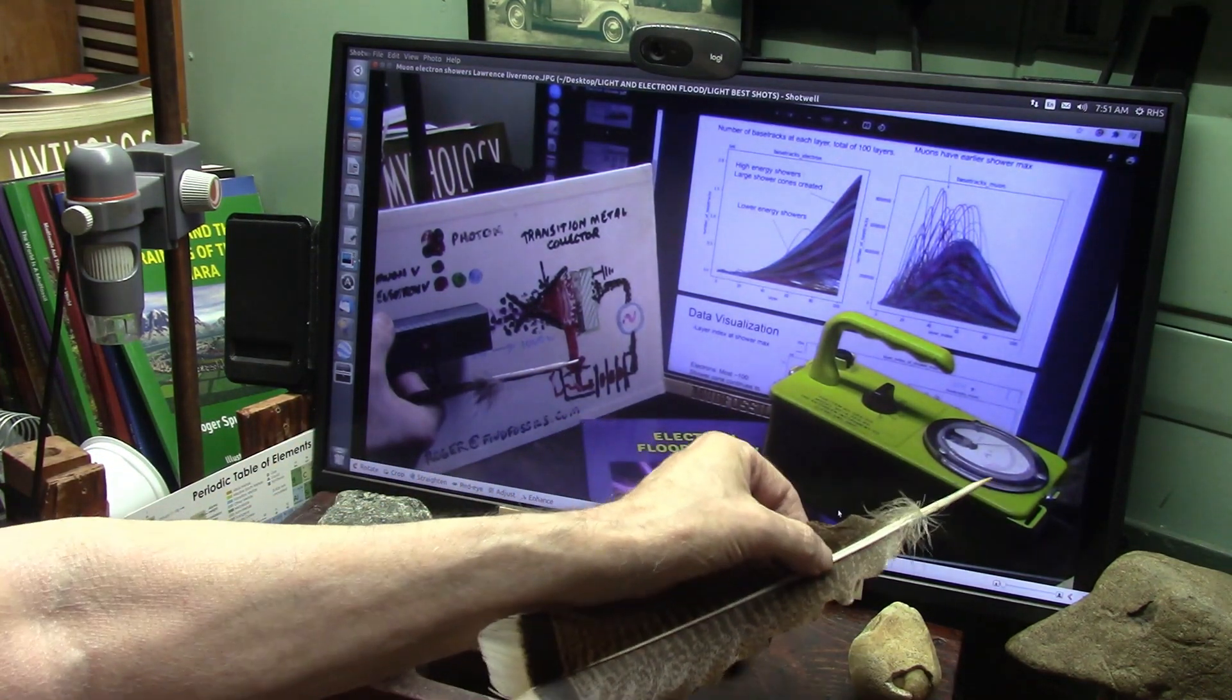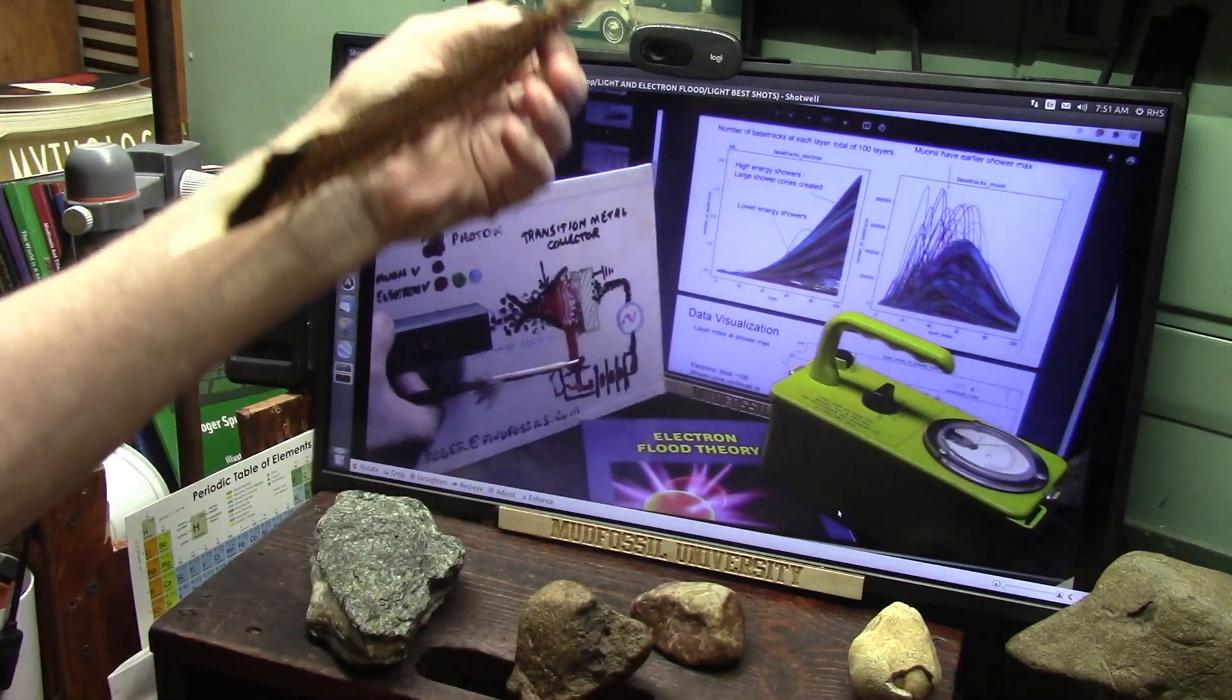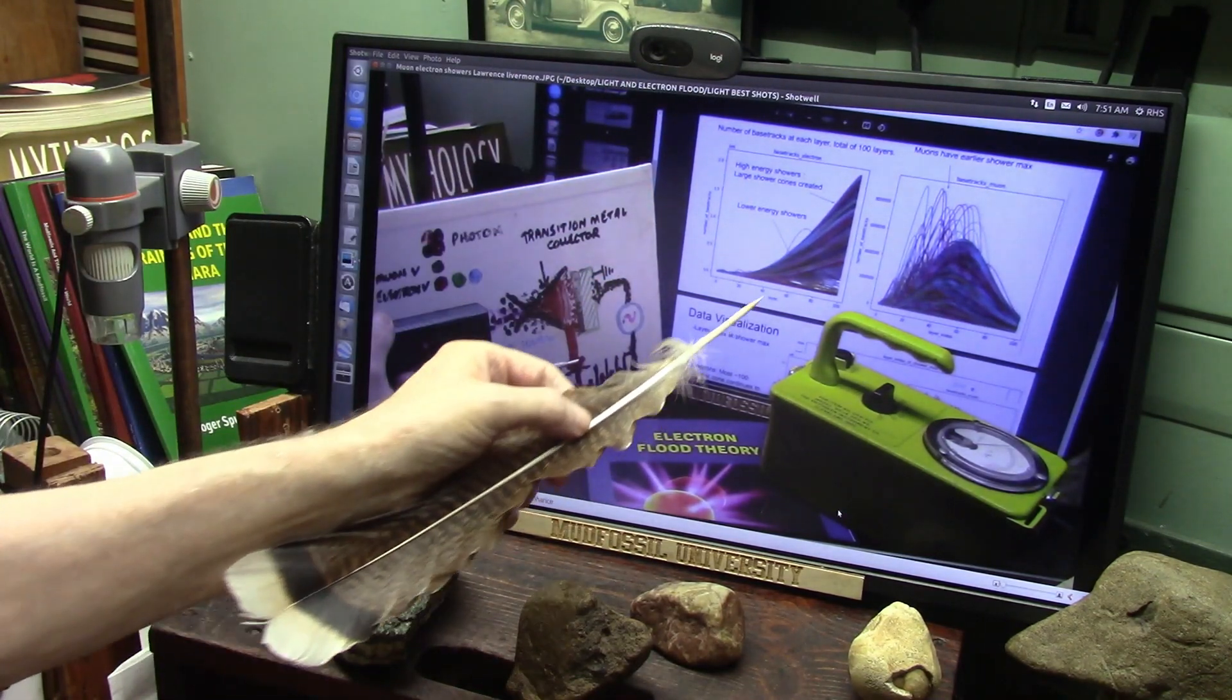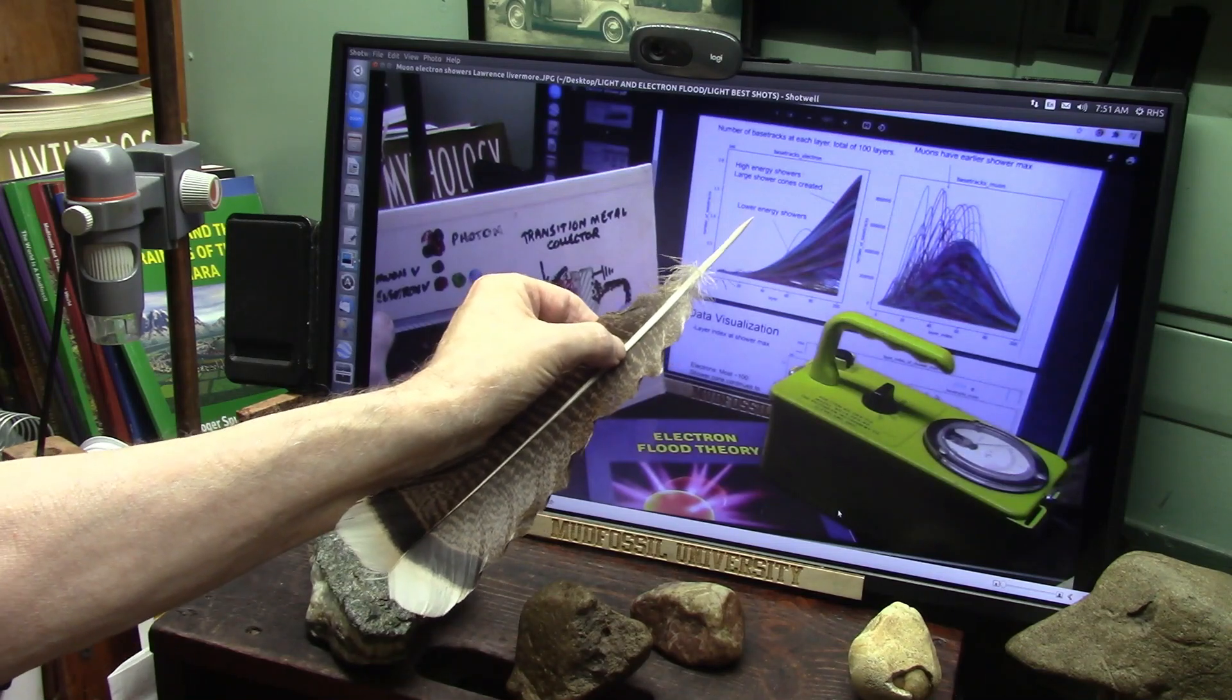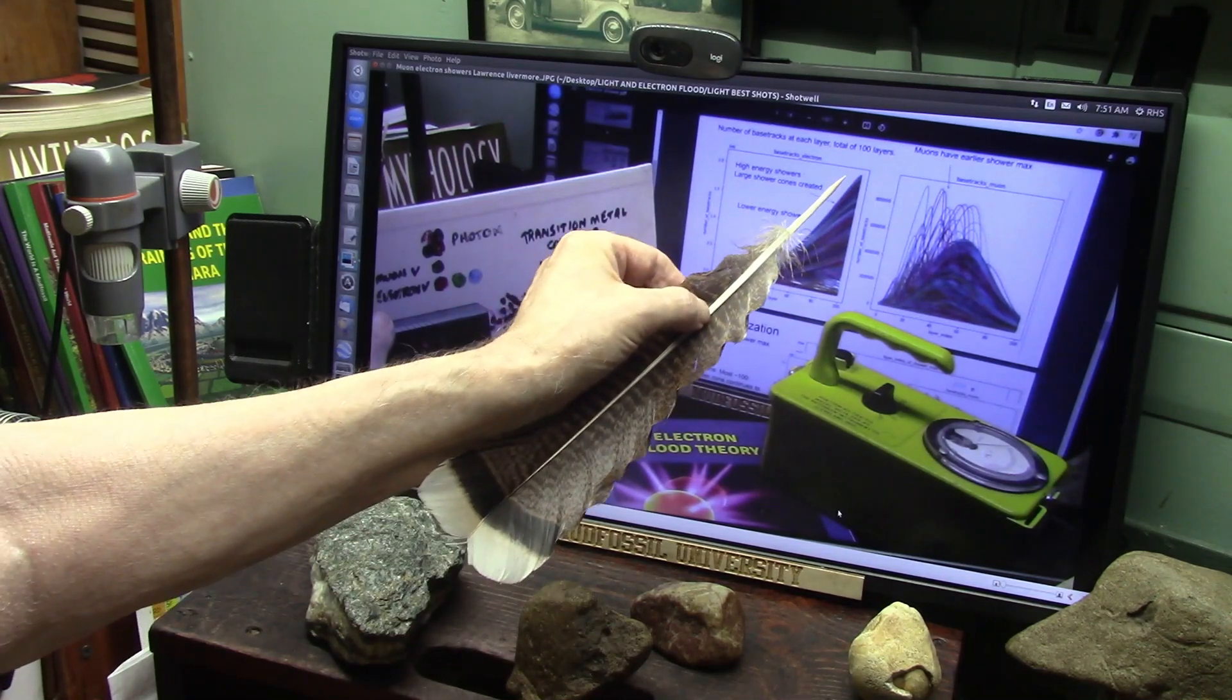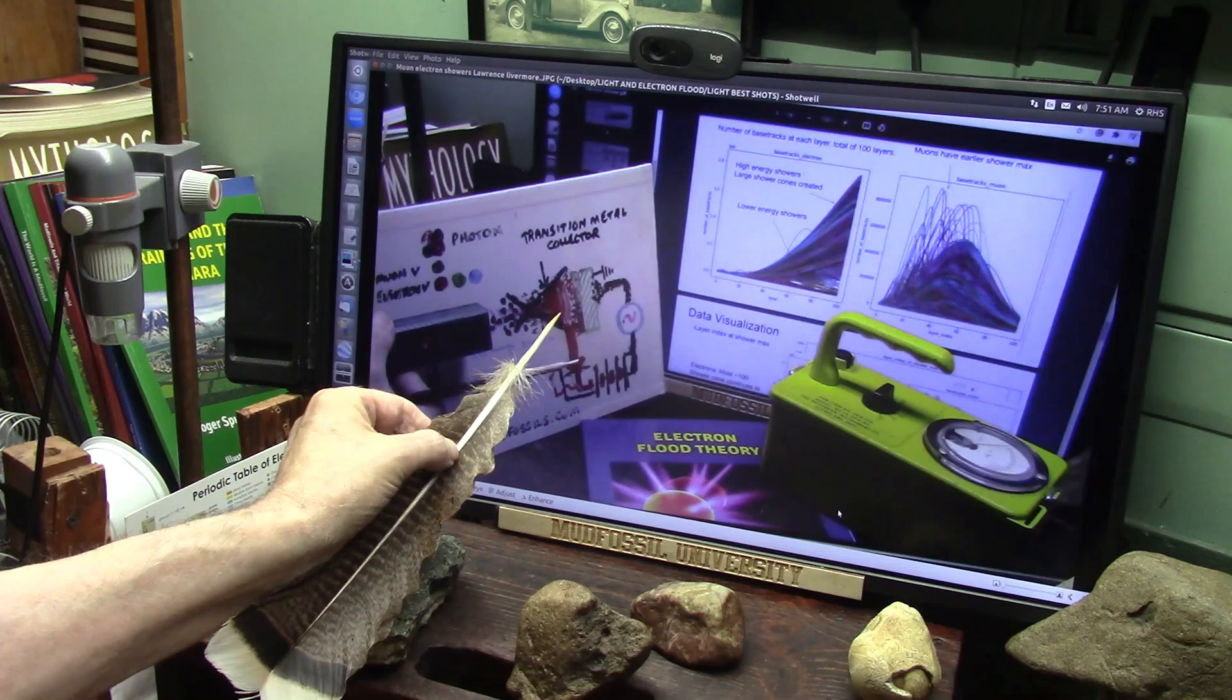You could carry it around in a box this size and power probably a car. This is what they did at Lawrence Livermore. These are the electron showers: very low energy here, then very extremely high energy here, because they are separated from their counterparts.